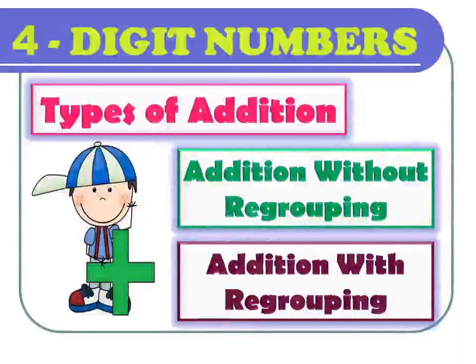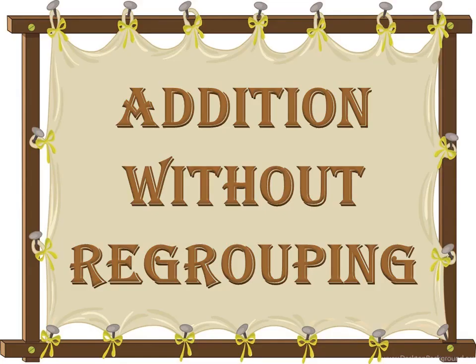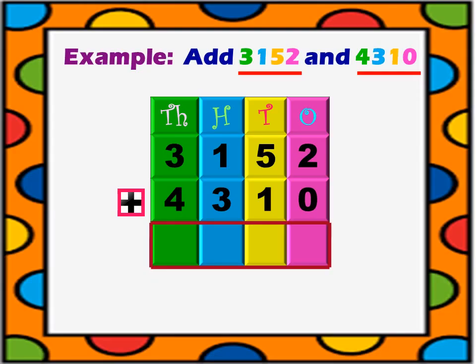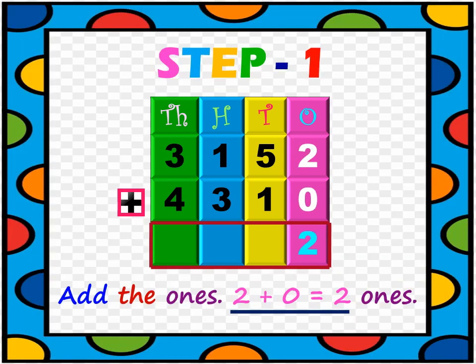In this session, we will learn about addition of 4-digit numbers with regrouping and without regrouping. First, let us see addition of 4-digit numbers without regrouping. Consider the example: add 3152 and 4310. Arrange the addends in column method according to their place value. Step 1: Add the ones column. The digit in the ones column of 3152 is 2, and of 4310 is 0. So, 2 ones plus 0 ones equals 2 ones.